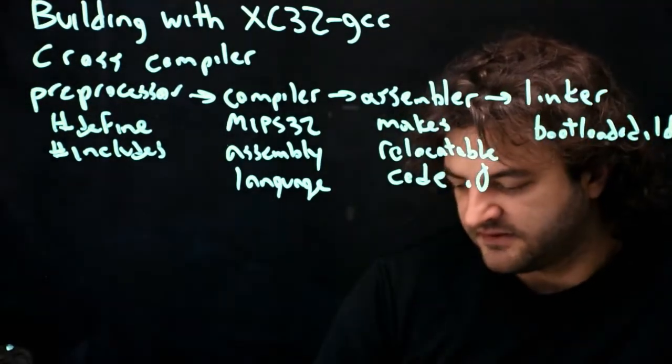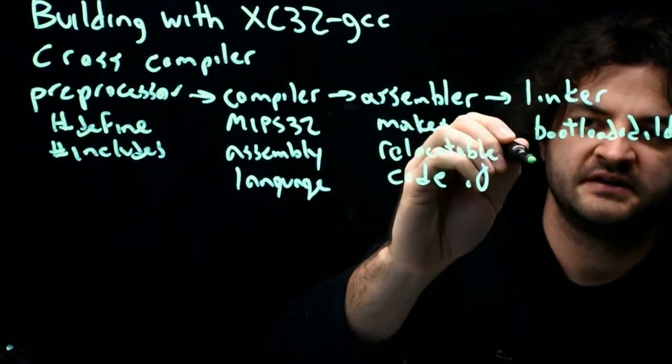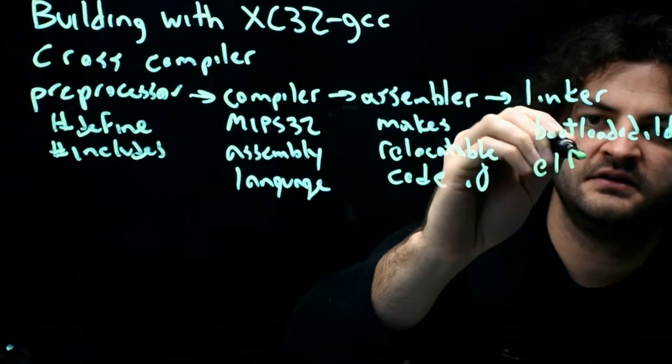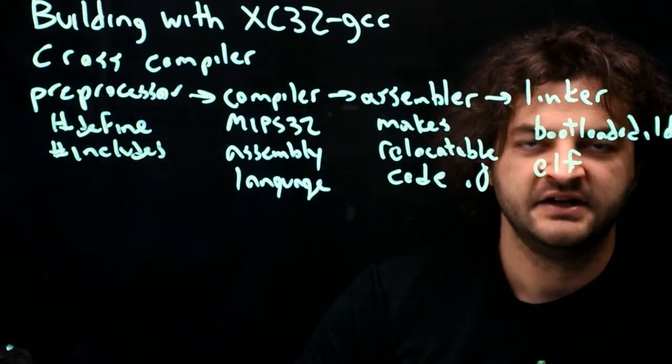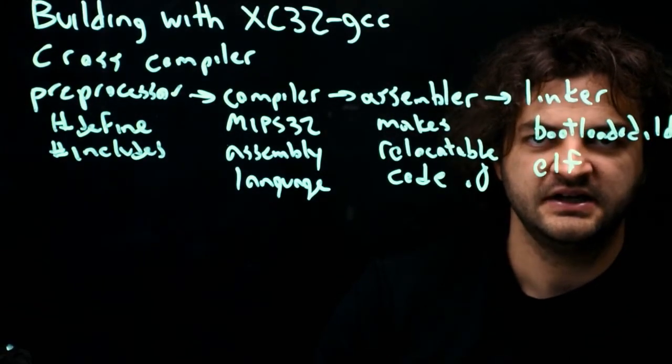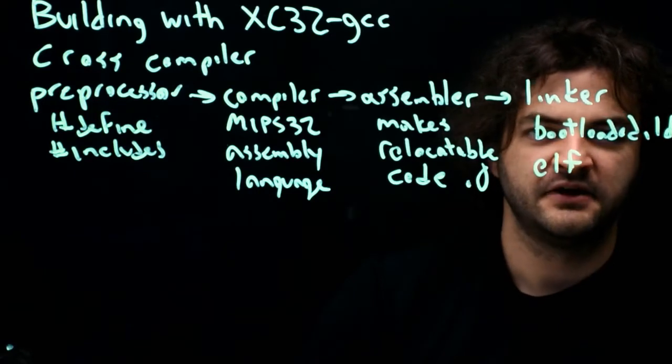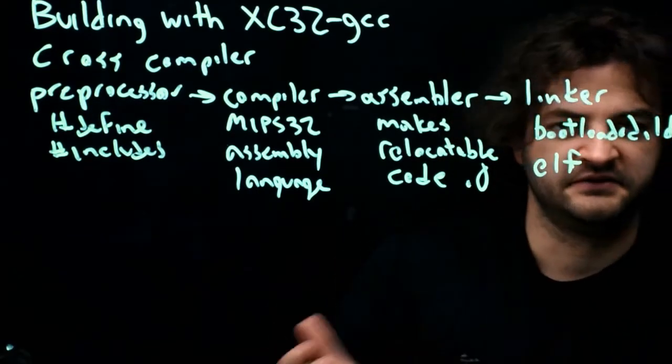The output of the linker program is an ELF file, which we haven't seen before. An ELF file is a very long file that says what every piece of memory inside of the PIC should be after this process has completed. Now, usually our code doesn't fill up all of memory, so the ELF file is full of zeros.